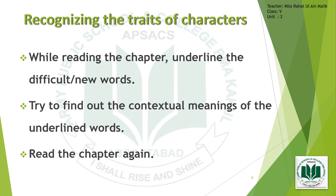After you have read the chapter, how would you recognize the traits or characteristics of characters? First, while reading the chapter, underline the difficult or new words — any word that you find difficult or that is new to you, just underline it. Try to find out the contextual meanings of the underlined words. You don't have to look the word up in a dictionary. Rather, make out the meaning within the context or background of the paragraph. Then read the chapter again and see whether you are successful in understanding, or still need a dictionary to look up the meanings.